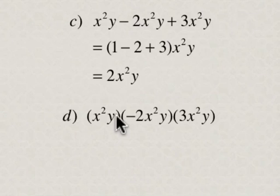For part d, here we're multiplying, and we're multiplying the same terms that we had in question c. So remember that when you multiply monomials, first you multiply the coefficients. So we're going to multiply 1, negative 2, and 3, and we're going to multiply the variables by keeping the base the same and adding the exponents.